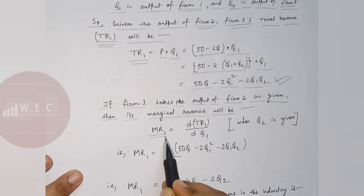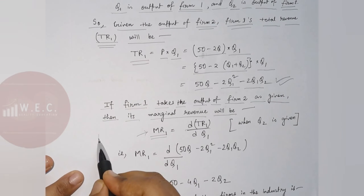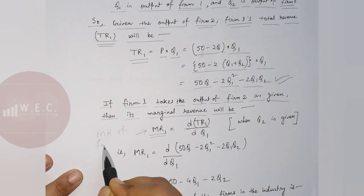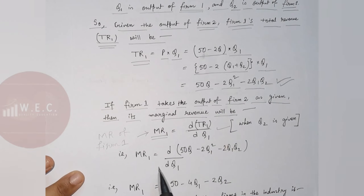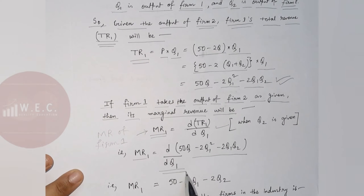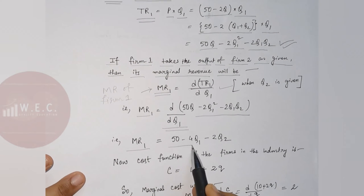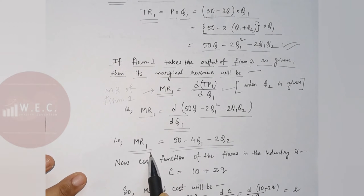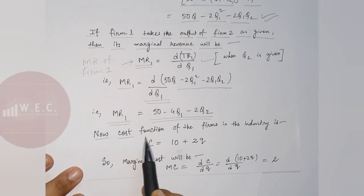Differentiating TR1 with respect to Q1, when Q2 is given, the marginal revenue of Firm 1 is: MR1 equals 50 minus 4Q1 minus 2Q2.